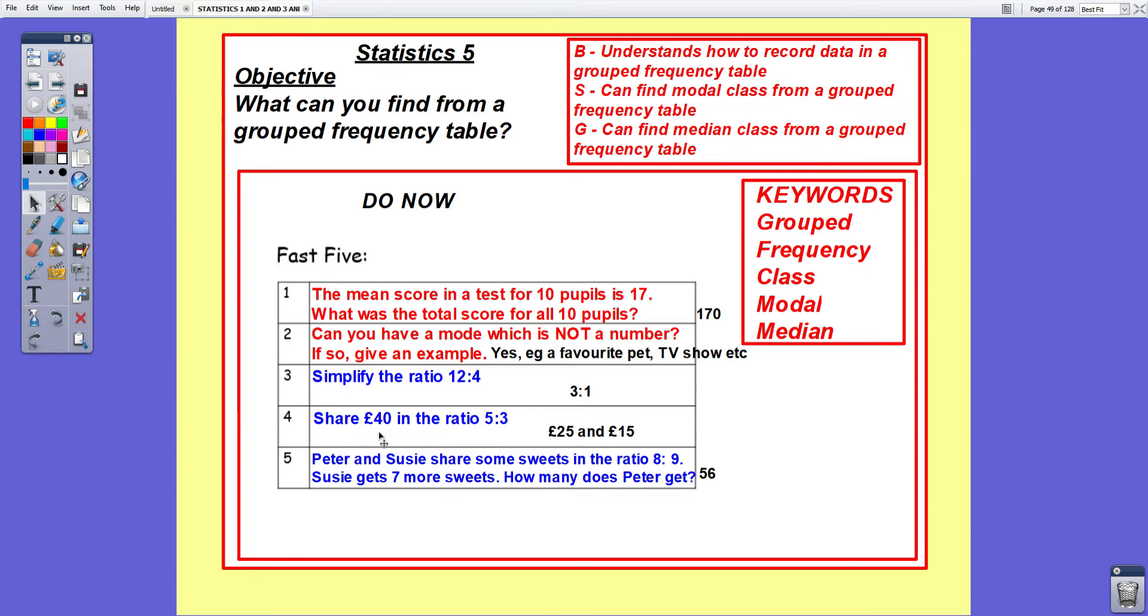Question four: share 40 pounds in the ratio 5 to 3. Add up 5 and 3, that's 8 shares. 40 divided by 8 is 5, so each share is worth 5 pounds. The first lot: 5 times 5 pounds is 25 pounds, and the second lot: 3 times 5 pounds is 15 pounds.